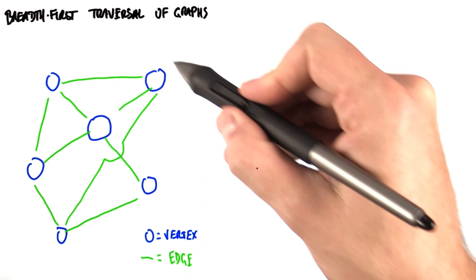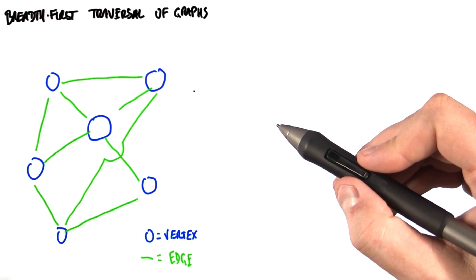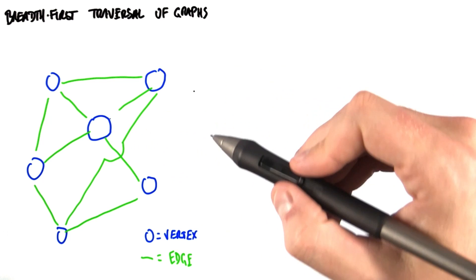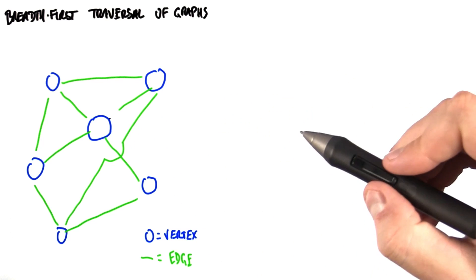A graph consists of a set of vertices and edges that connect these vertices. So in this picture, vertices are blue circles, edges are green lines.